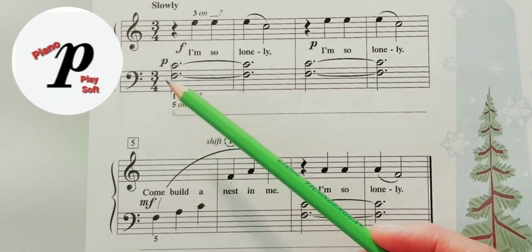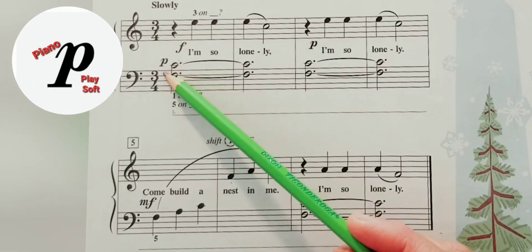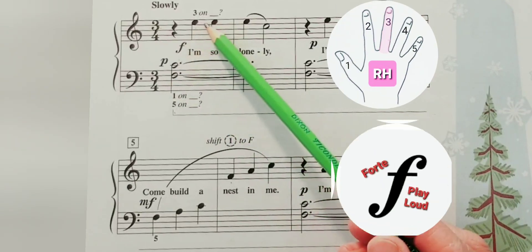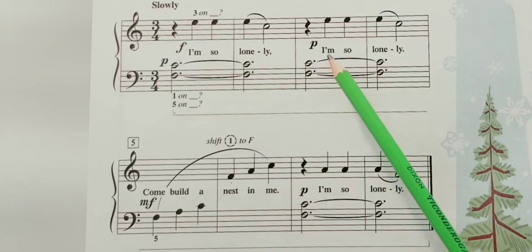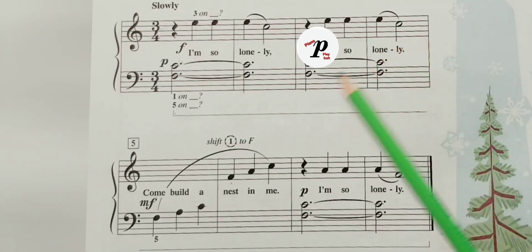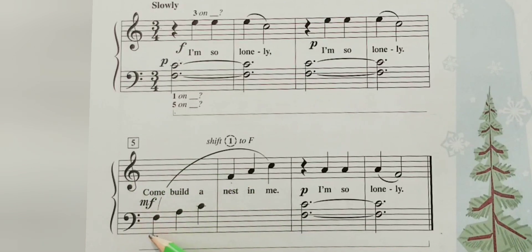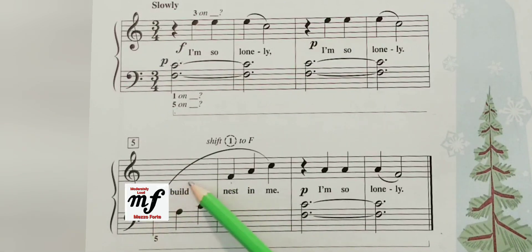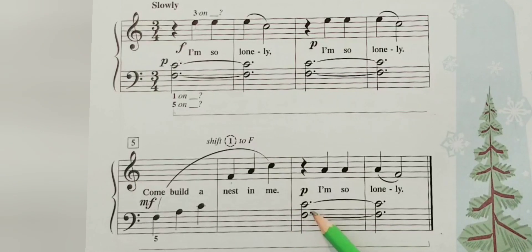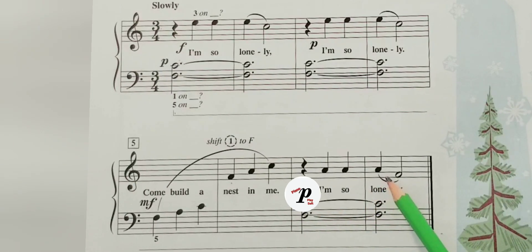We are going to play piano soft with the left hand and right hand will play forte. Then on measure three both hands will play soft, piano. Measure five is mezzo forte for both hands, and then on measure seven and measure eight we play piano again.